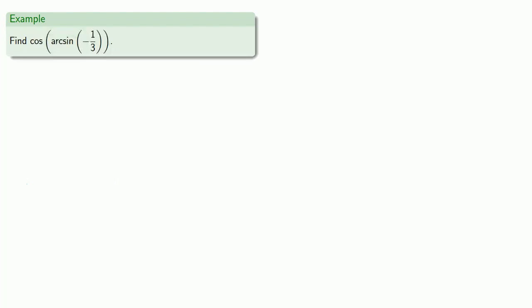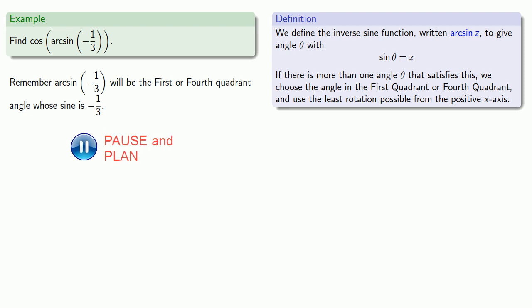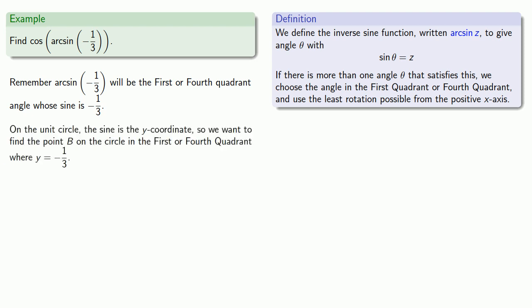Or say we want to find the cosine of the arcsine of minus 1 third. So remember the arcsine of minus 1 third will be the first or fourth quadrant angle whose sine is minus 1 third. On the unit circle, the sine is the y-coordinate. So we want to find the point B' on the circle in the first or fourth quadrant where y is equal to minus 1 third. And this point is right here in the fourth quadrant.